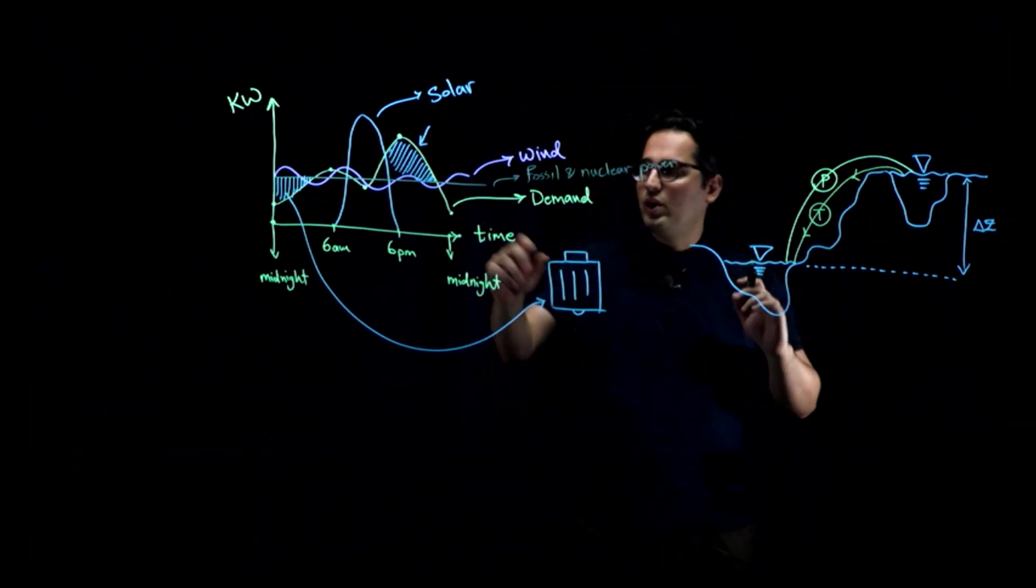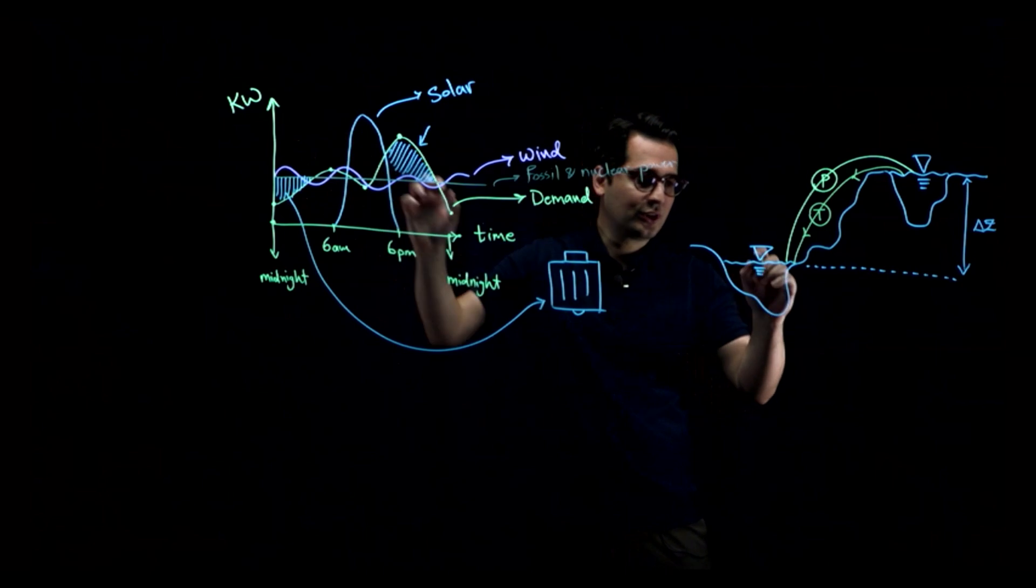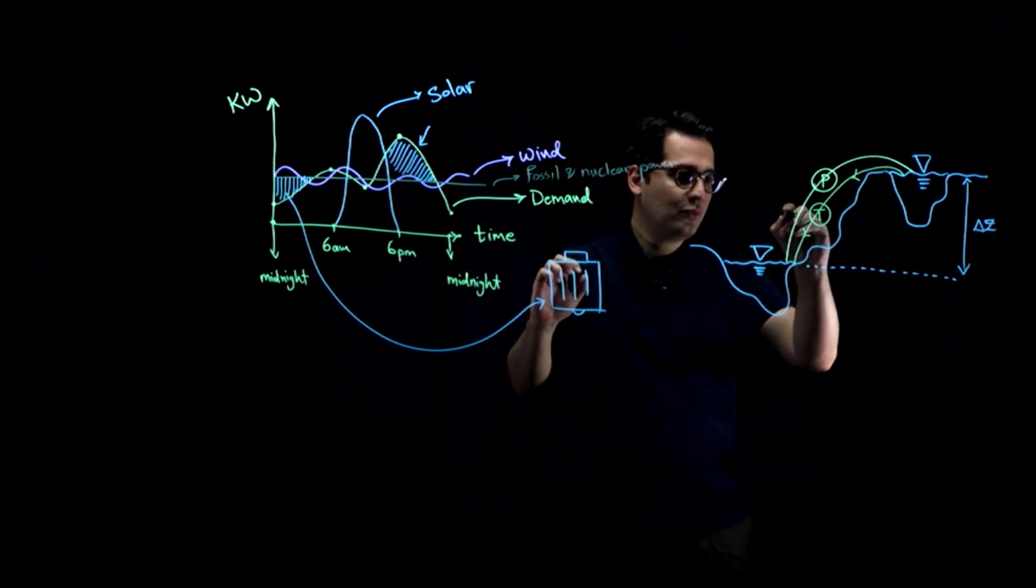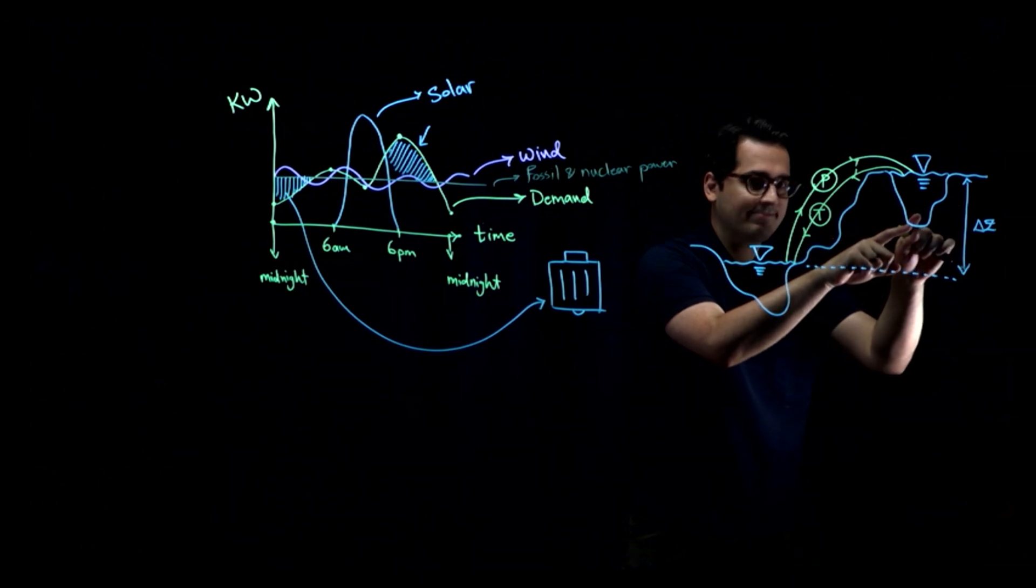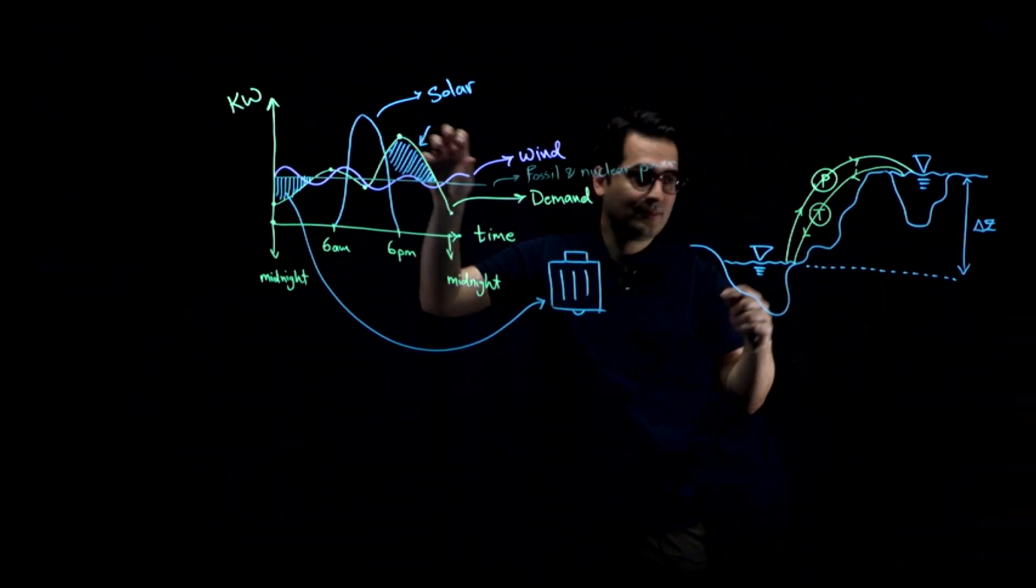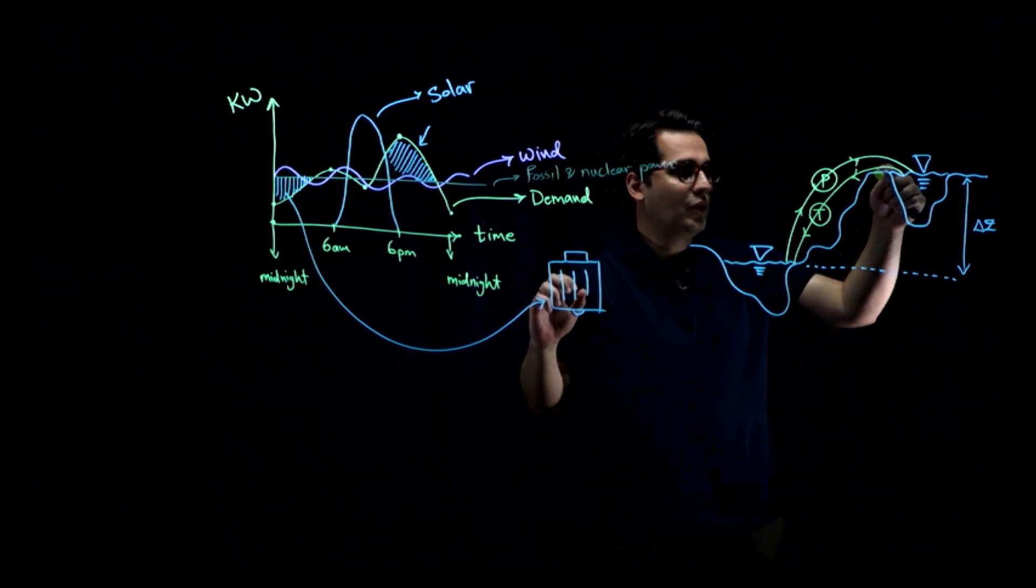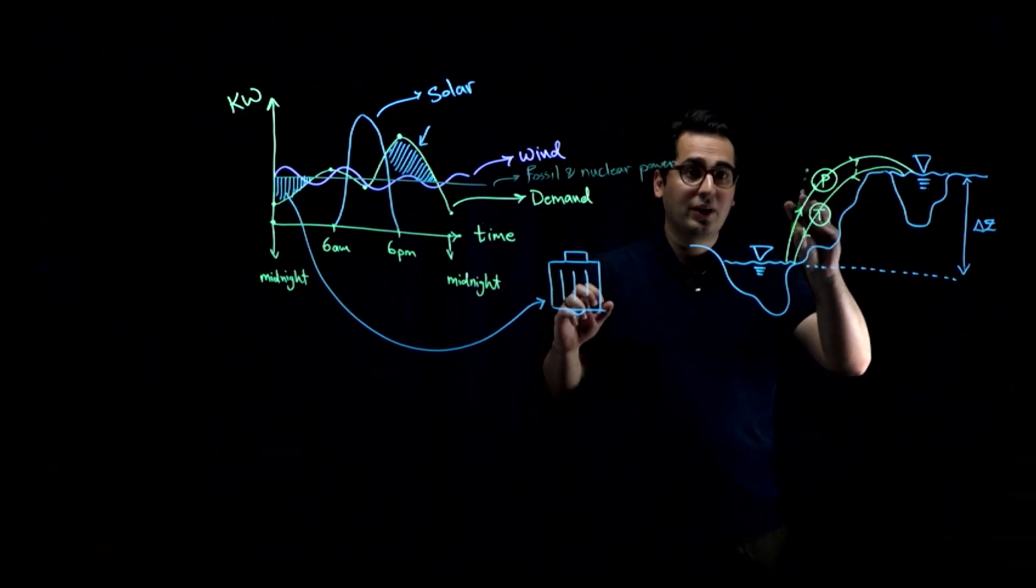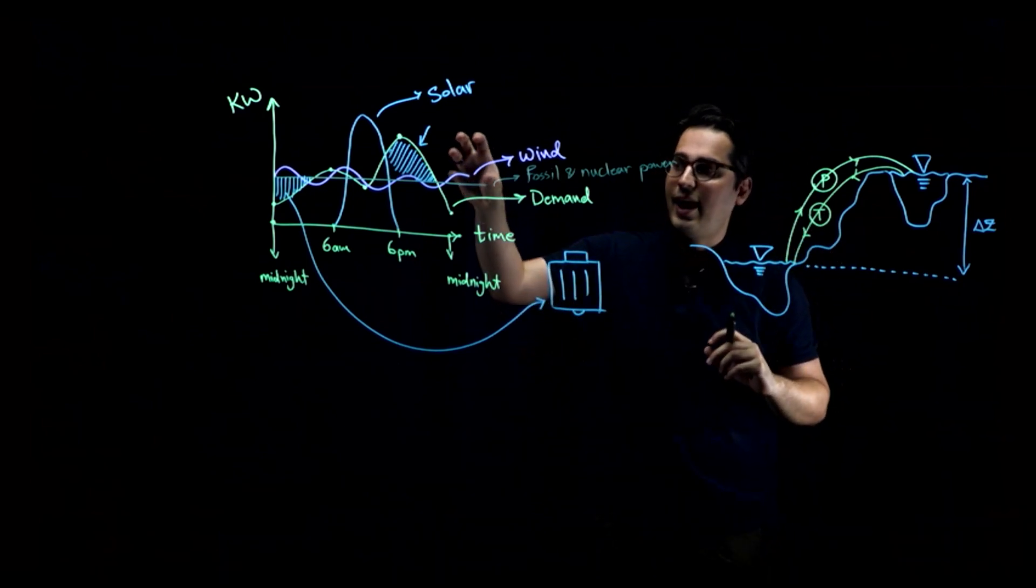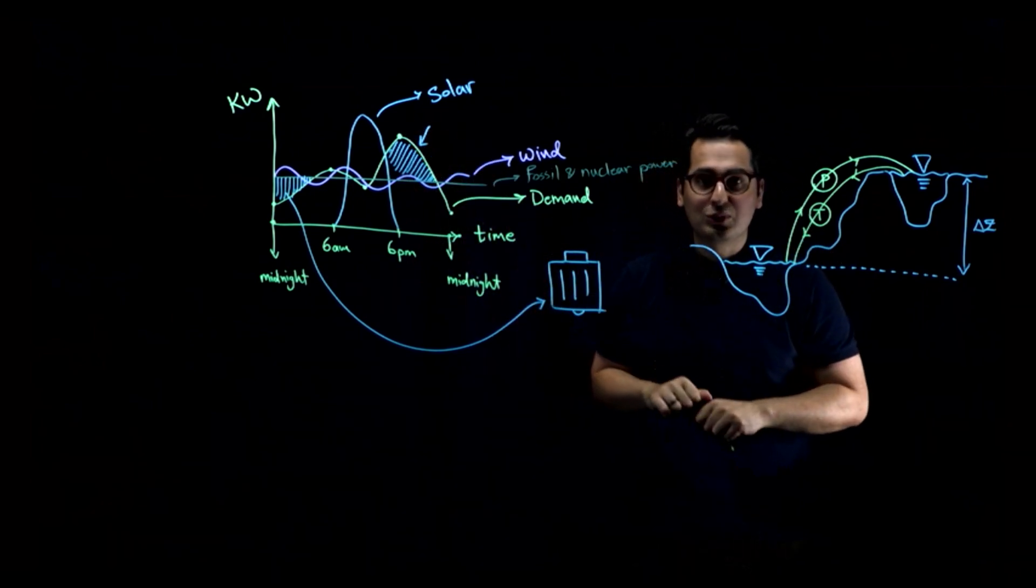So let me repeat that. When you have excess electricity, you're going to use that electricity to pump water up the hill into the higher reservoir. And then when you need electricity, by gravity, the water is going to go down into these pipes. And there is a turbine over here. This turbine is going to generate electricity and feed the system so you can use that electricity.